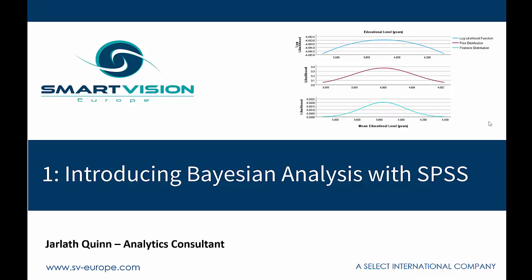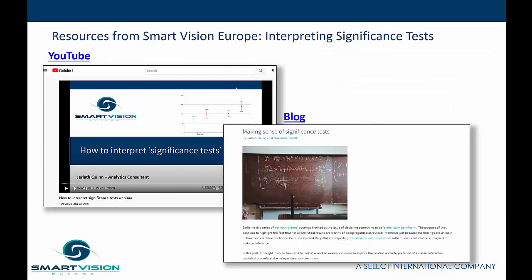In this video series I'm going to introduce the concept of Bayesian statistical analysis and how it can be applied in IBM SPSS Statistics. To begin with, we're going to focus on the background to the Bayesian approach and its theoretical foundations. Much of the subject matter will be contrasted with traditional statistical analysis, particularly concepts like hypothesis testing and p-values. If you need to brush up on that knowledge, I recommend checking out our existing materials, such as the recorded webinar 'How to Interpret Significance Tests' or my blog post 'Making Sense of Significance Tests'.